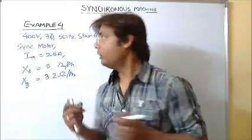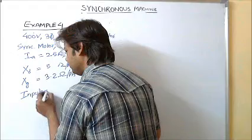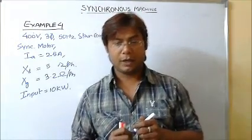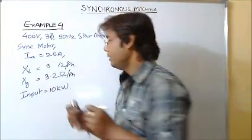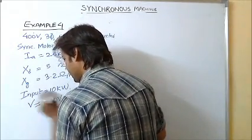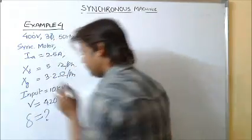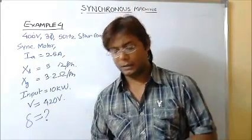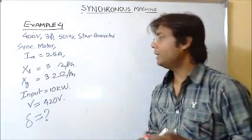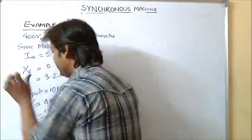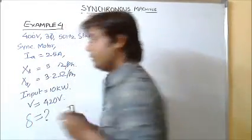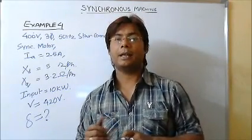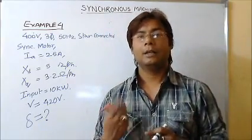If the input is 10 kW, we have to determine the power angle delta. This is similar to previous questions but now Xd and Xq are both given, making it a salient pole machine problem. Since armature current Ia and input power are given, I can find the direct-axis current Id and quadrature-axis current Iq.